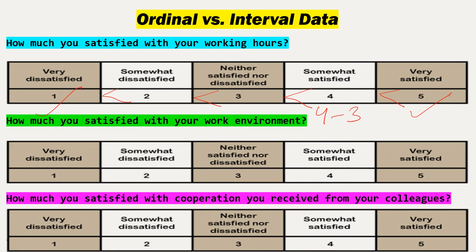If you do 4 minus 3, there is no meaning to that — you cannot subtract neutral from somewhat satisfied. You also cannot describe how much more satisfied a person who checked number 5 is compared to a person who checked number 4. The difference between the categories is not known or meaningless. So the data cannot be measured on an interval scale; it can only be measured on an ordinal scale because we have the order of categories, but the difference between categories is meaningless.